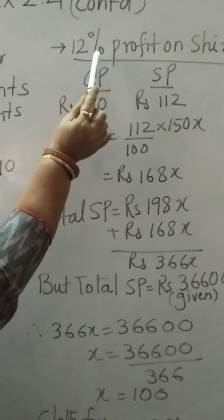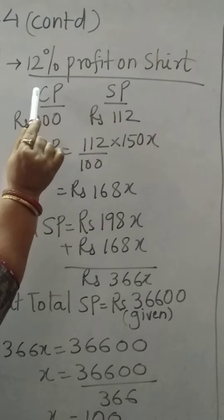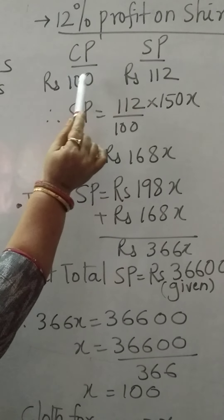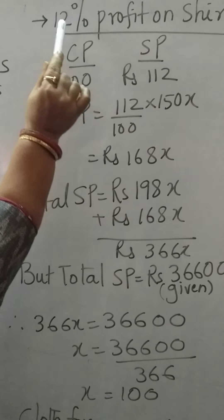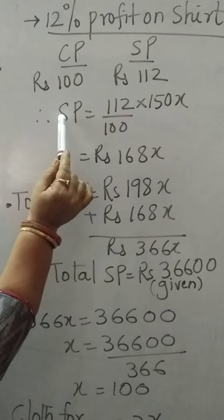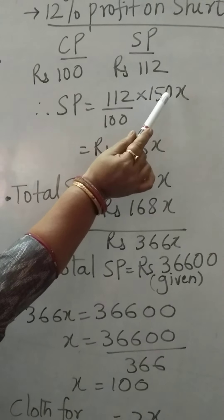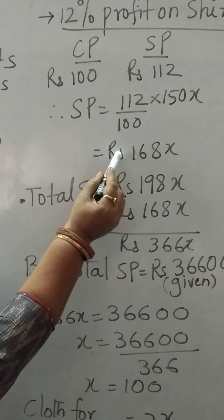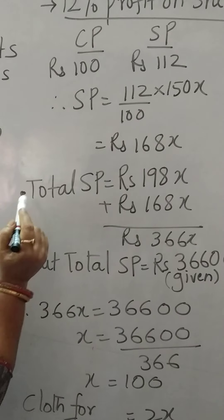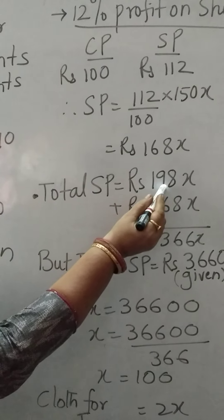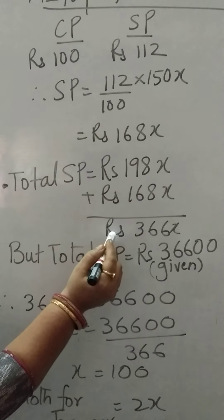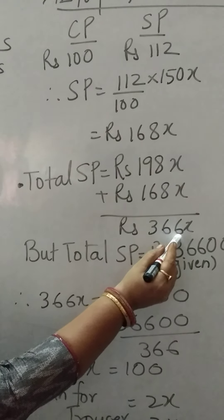Same way, 12% profit is made on shirt's cloth. So CP, SP. 100, 112. 100 plus 12 gives you 112. So SP will be 112 upon 100 into 150x. That is rupees 168x. Total SP is rupees 198 plus 168, rupees 366x.